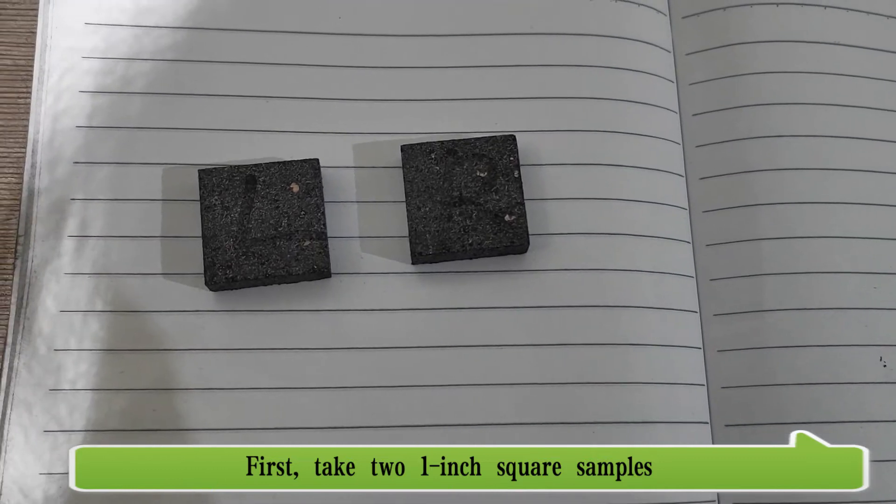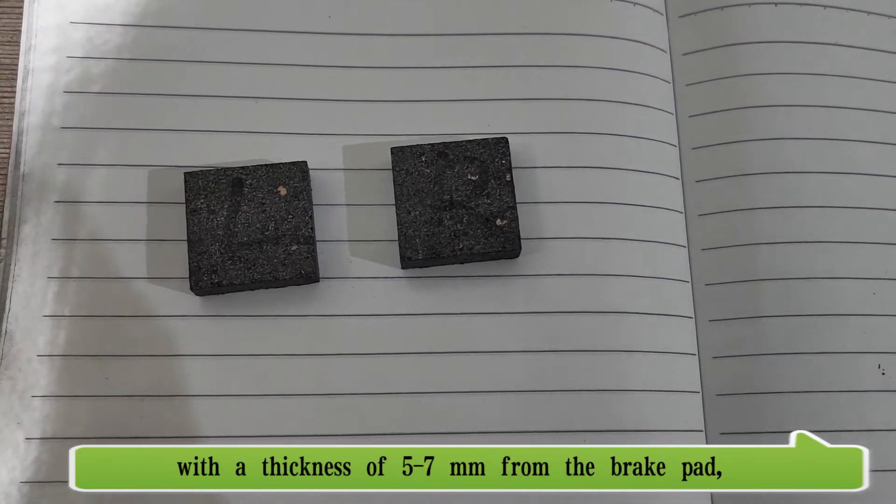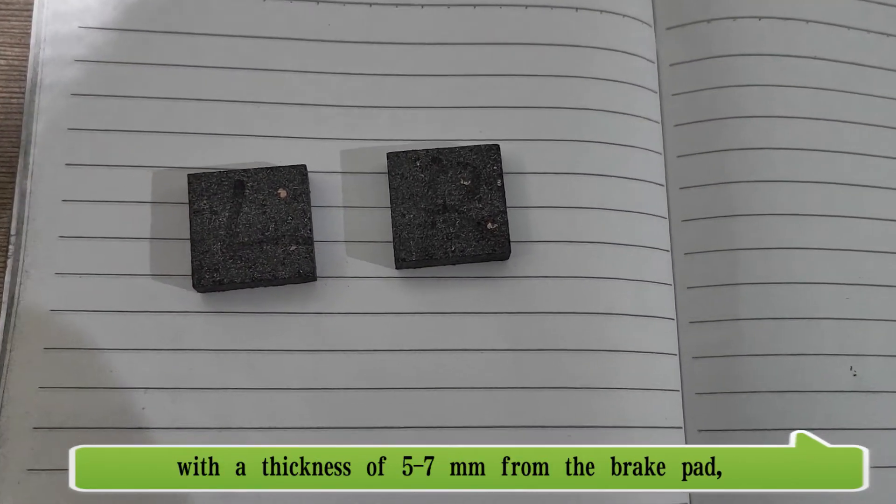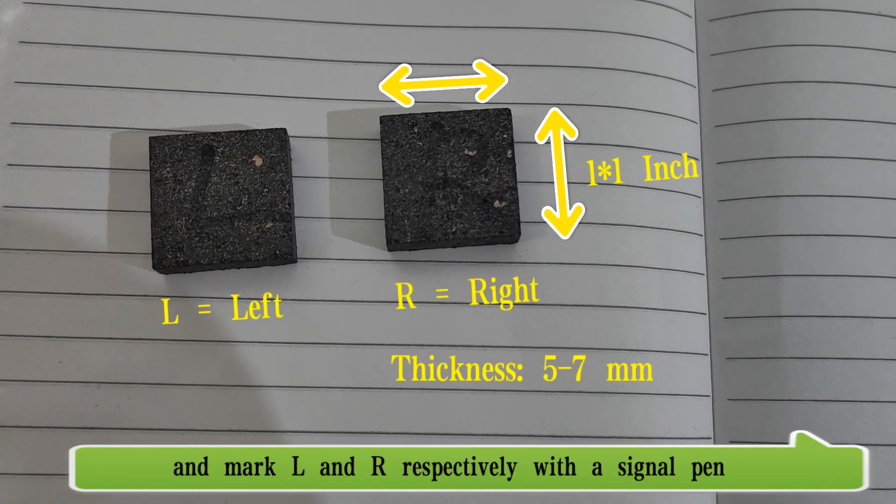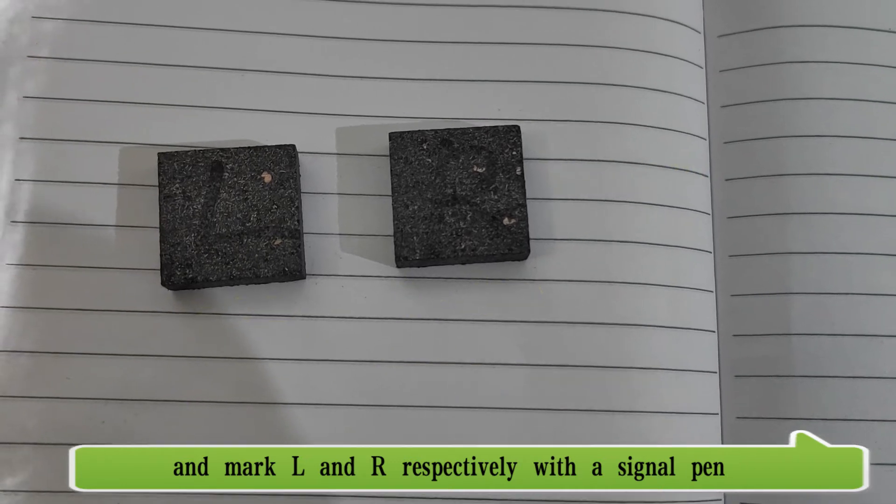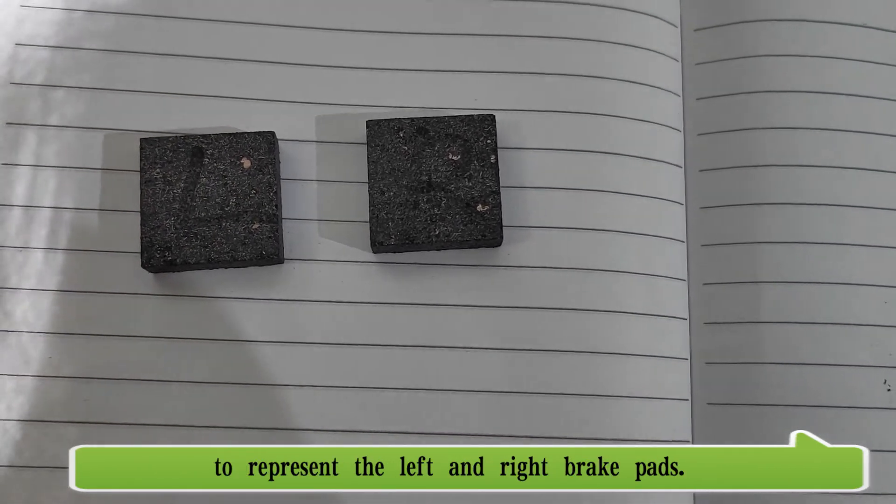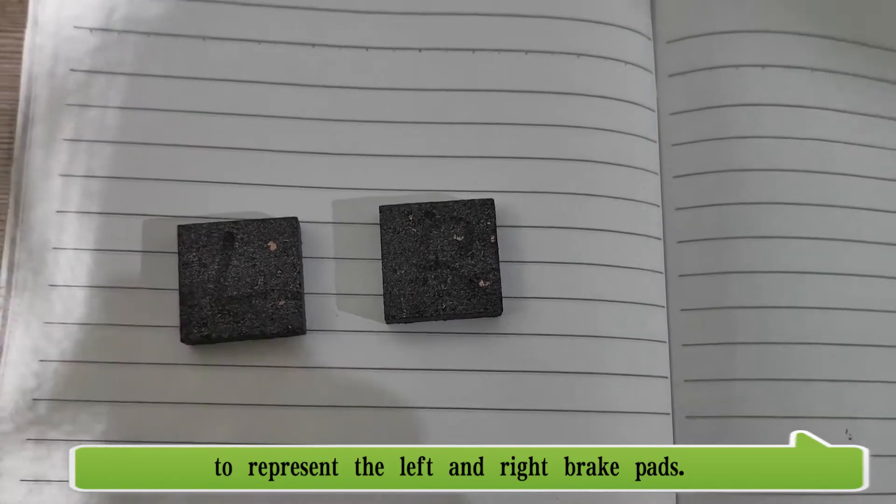First, take two 1-inch square samples with a thickness of 5-7mm from the brake pad and mark L and R respectively with a signal pen to represent the left and right brake pads.